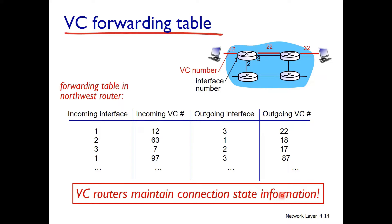Once the connection is built, the entry is added to the forwarding table. Once the connection is closed, the entry will be removed. This connection state information is maintained in the router as long as the connection is active.